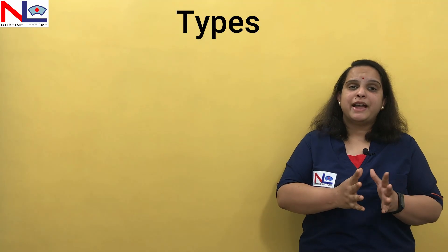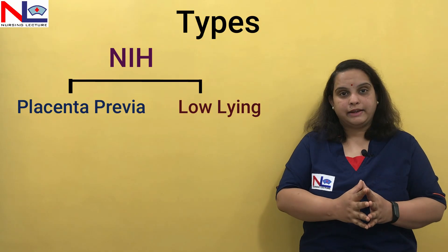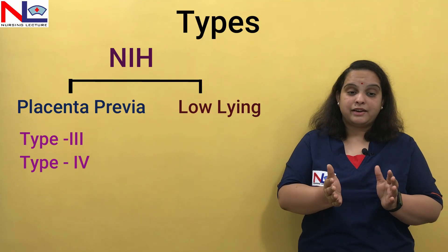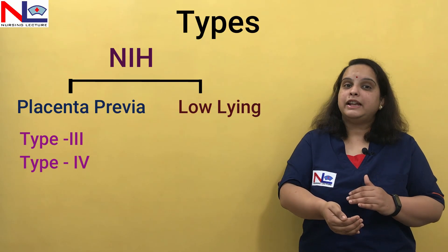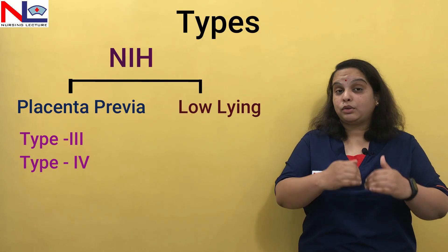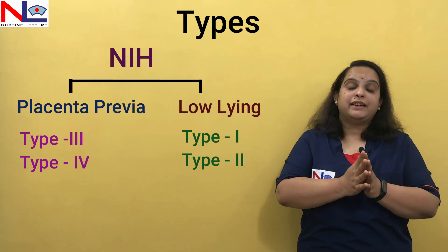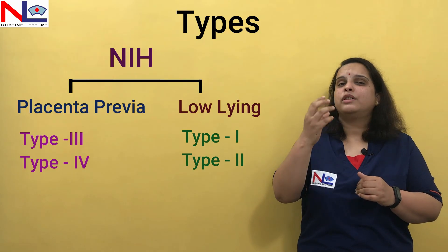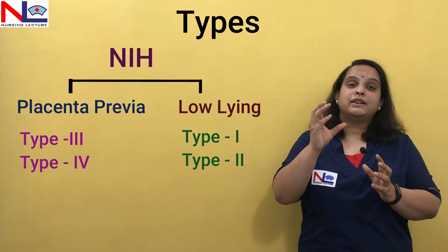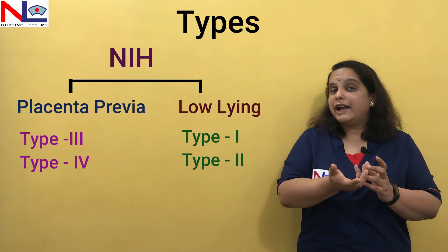This classification has been modified by NIH — the National Institute of Health — which categorizes placenta previa into two types: placenta previa and low-lying. The term placenta previa is used for types three and four, where the placenta in the lower segment partially or completely covers the internal os. Low-lying refers to types one and two, where the placental edge comes within a perimeter of two centimeters from the internal os.